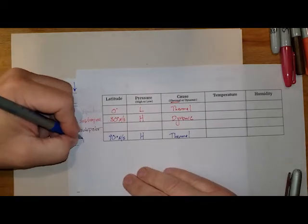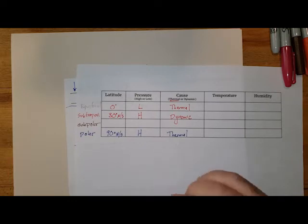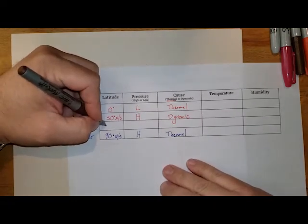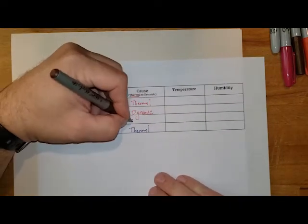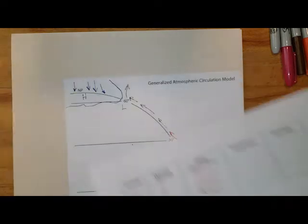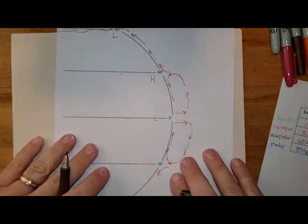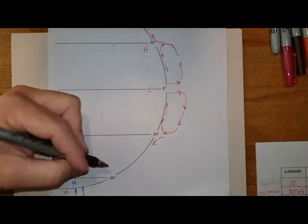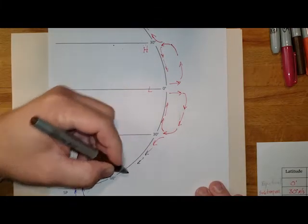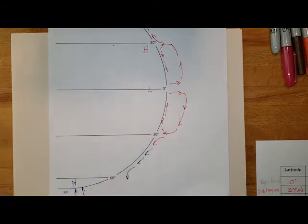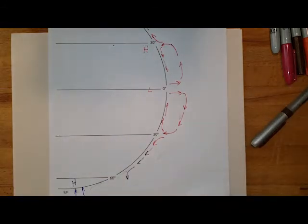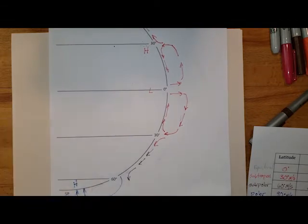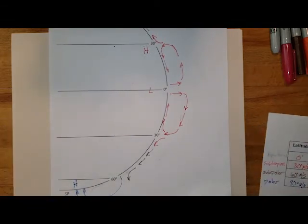The subpolar low is located at about 60 degrees north and south, and it is dynamic. That's our global general circulation model: mid-latitude air comes across, runs into this front — this wall of cold, dry, dense air — and because it is less dense than the polar air, we get a low pressure system.